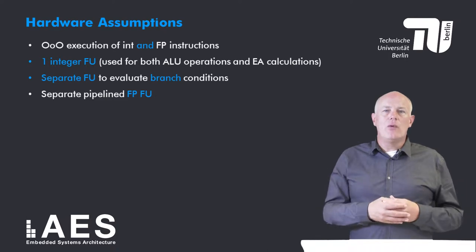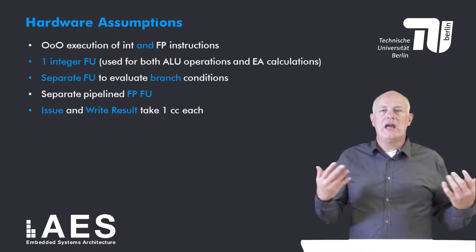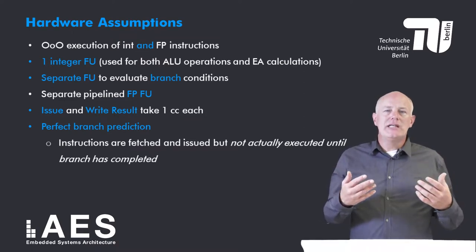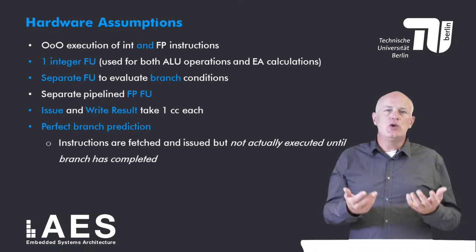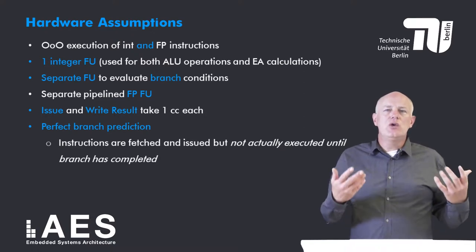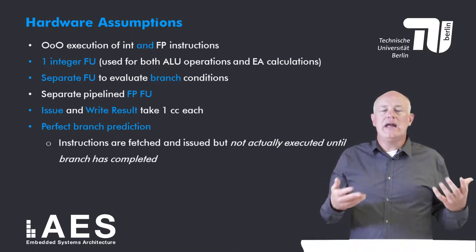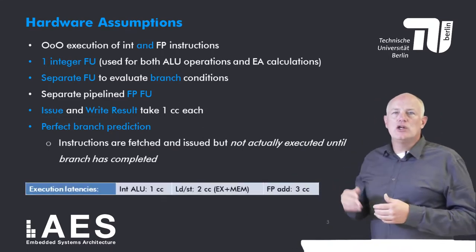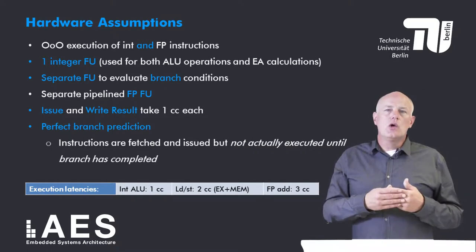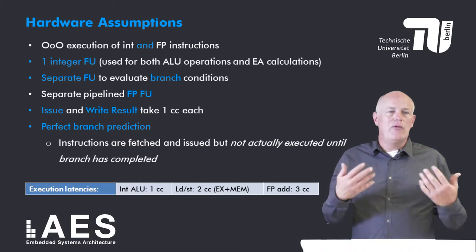There is also a separate pipelined floating point functional unit, and I will assume that the issue phase and the write result phase both take one clock cycle each. In addition, I will assume perfect branch prediction. Branch prediction will be discussed in the next lesson, but in this lesson I assume that the correct target instruction can be issued immediately after the branch instruction. However, the execution of the target instruction cannot start before the branch has completed. Finally, the execution latencies are: one clock cycle for an integer ALU instruction, two clock cycles for loads and stores, and three clock cycles for a floating point addition.